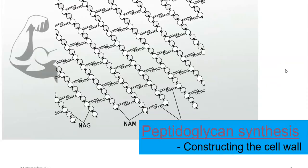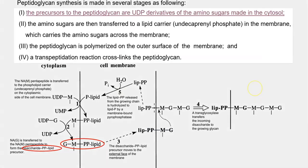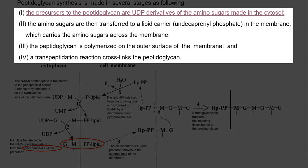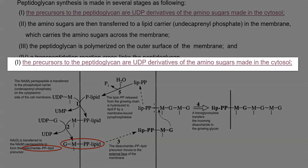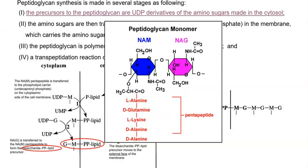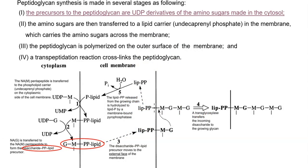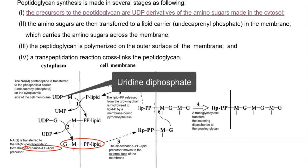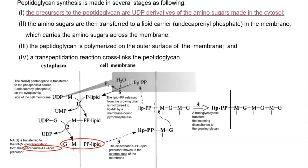Next, we look at how peptidoglycan is synthesized and how the cell envelope is constructed. There are four steps involved in peptidoglycan synthesis. The first step involves precursors of peptidoglycan — specifically N-acetyl glucosamine and N-acetyl muramic acid — which are made as UDP (uridine diphosphate) derivatives.